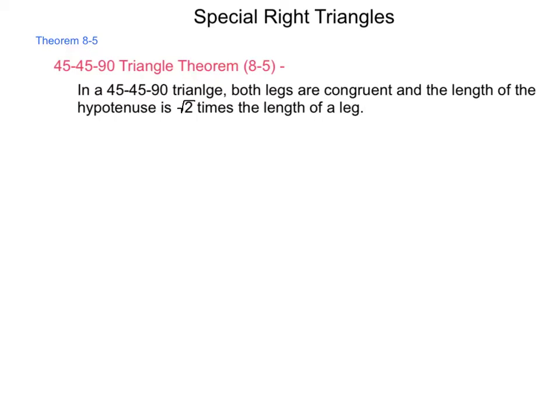A 45-45-90 triangle can be formed by taking the diagonal of a square. If I have a square with 90-degree angles and all four sides congruent, and draw a diagonal across it, the resulting triangle will have a 90-degree angle and two 45-degree angles because we bisected those corners. Let's pick a side length of 3, so both sides would be 3.